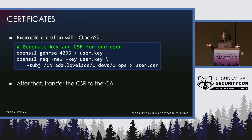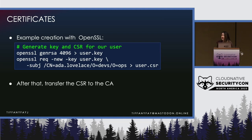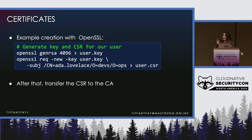Starting off with certificates: the commands here show you how to create a certificate signing request, often listed as CSR. This example is using OpenSSL because it's super widespread and you probably have it on your machine by default — I'm using a Mac and it was already there. Many folks might prefer using something like CFSSL, which is Cloudflare's, or maybe they want to use Vault or some other certificate authority, usually shortened to CA. After that, you transfer the CSR to the CA, and depending on what kind of cluster you have, this can be done differently.